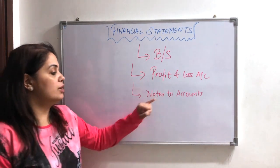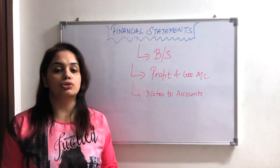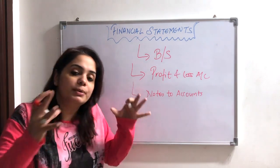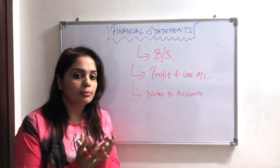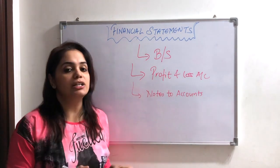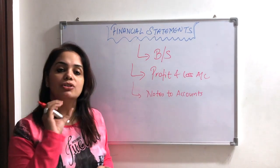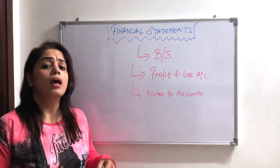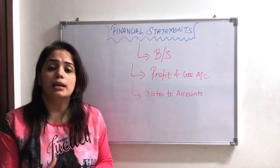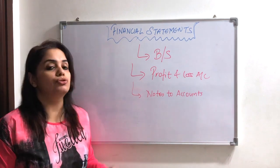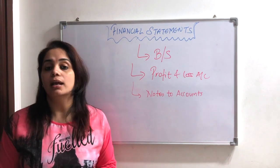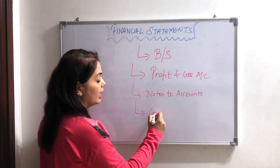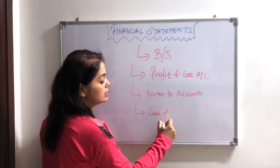In notes to accounts, we have some notes where we can give descriptive information that we can't show in the main statements. In profit and loss and balance sheet we only show amounts with headings. The descriptive details behind those amounts we write in notes to accounts. Then we finally have cash flow statements.